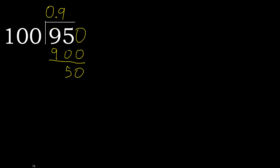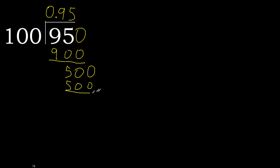That is not a number, therefore complete. Always complete with 0: 500. 100 multiplied by 5 is 500. Subtract 0, therefore finish it.